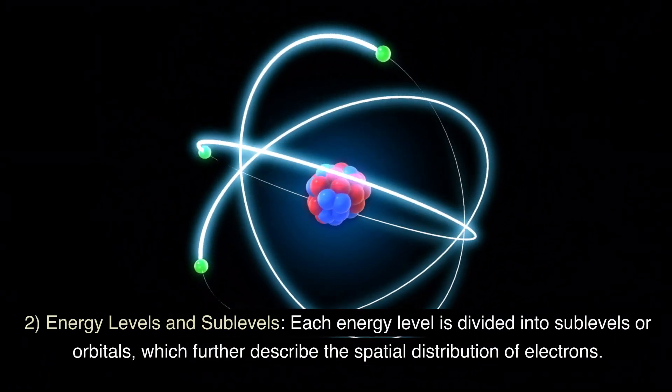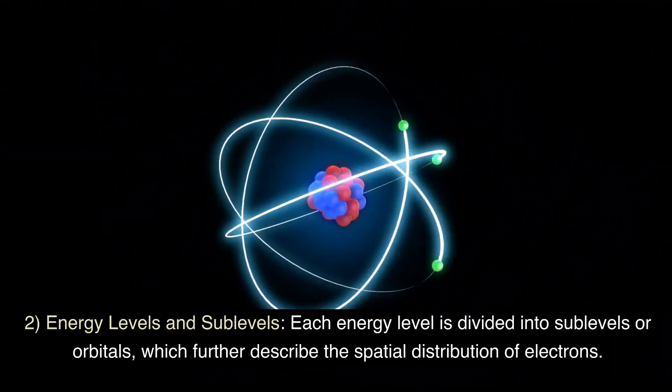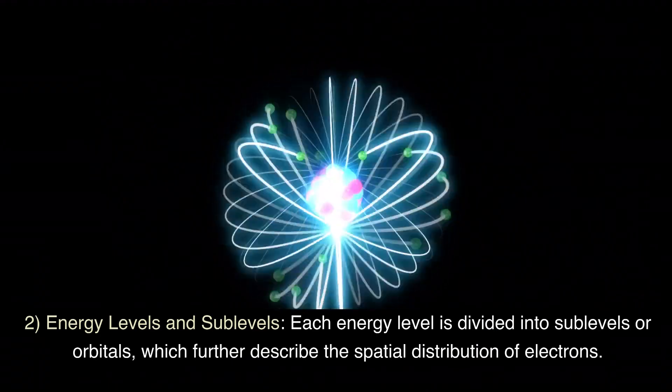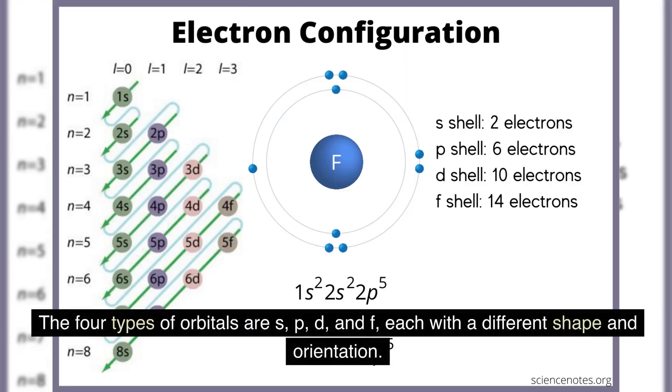Energy levels and sublevels: each energy level is divided into sublevels or orbitals, which further describe the spatial distribution of electrons. The four types of orbitals are s, p, d, and f, each with a different shape and orientation.